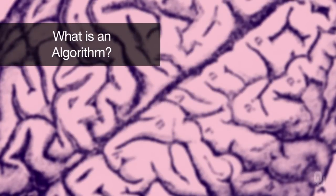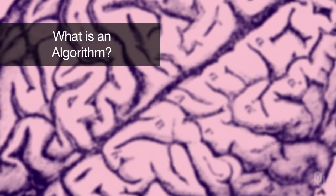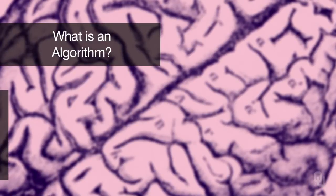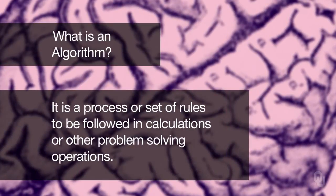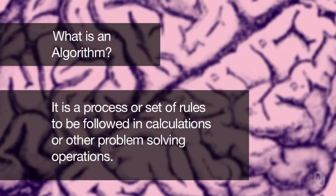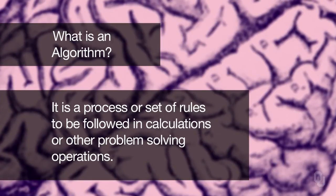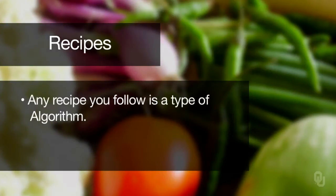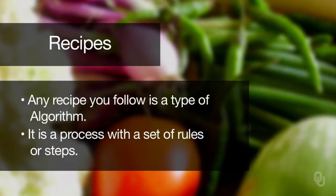So what is an algorithm specifically? Well, the definition from the Merriam-Webster dictionary is that it's a process or a set of rules to be followed in calculations or other problem-solving operations. Any recipe that you follow is really an algorithm — it is a process or a set of rules.